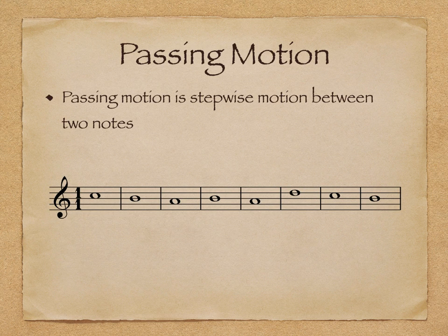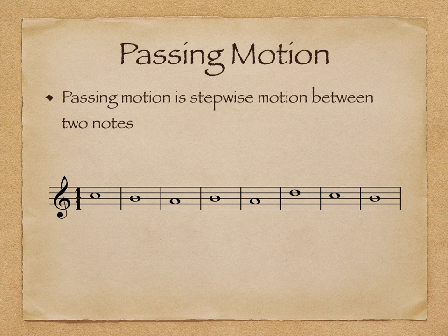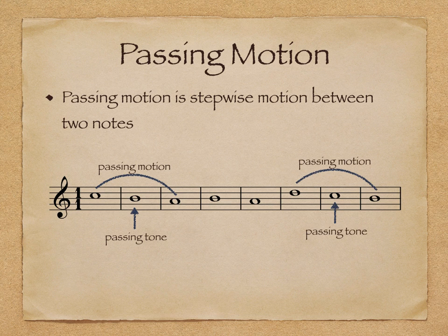There are three important motions that make up most flowing lines. The first is passing motion — stepwise motion between two notes. For example, there is passing motion between the first three notes C, B, and A, and the last three notes D, C, and B. All three tones are involved in the passing motion, and the middle tone is called the passing tone. Passing motion occurs between two stable pitches, with an active pitch acting as the passing tone.